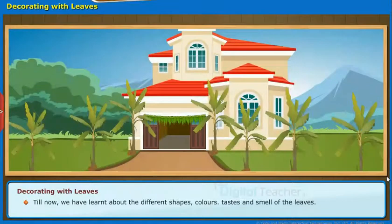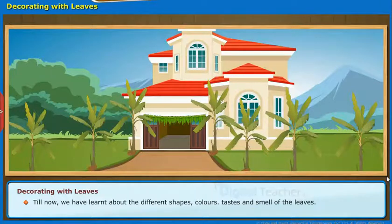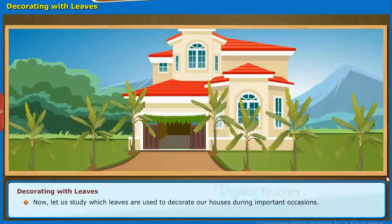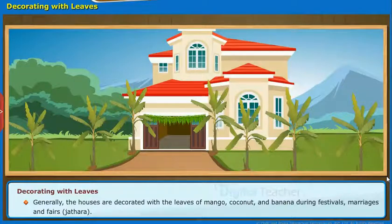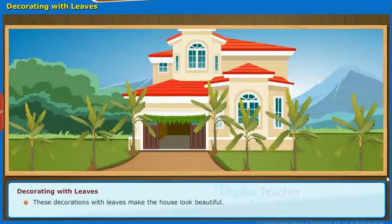Till now, we have learnt about the different shapes, colors, tastes and smell of the leaves. Now, let us study which leaves are used to decorate our houses during important occasions. Generally, the houses are decorated with the leaves of mango, coconut and banana during festivals, marriages and fairs or jatara. These decorations with leaves make the house look beautiful.